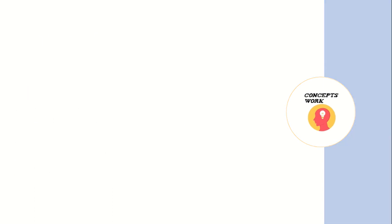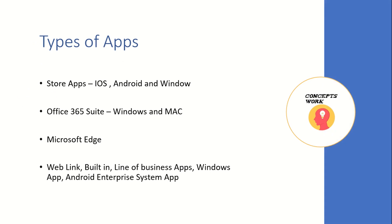Now let's look at the types of applications that can be deployed. The first category is store apps, scoped to three platforms: iOS, Android, and Windows. Then we have Office 365 suite, deployable to Windows or Mac. We can also deploy Microsoft Edge through Intune for different users. Lastly, we have web links, built-in apps, line of business apps — basically in-house developed apps — then Windows apps and Android enterprise system apps.